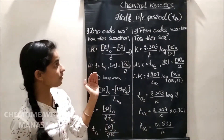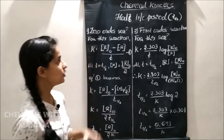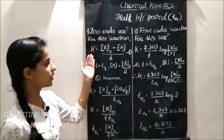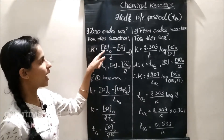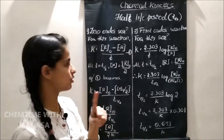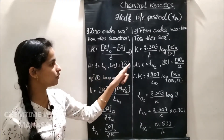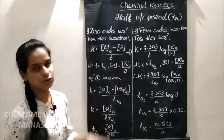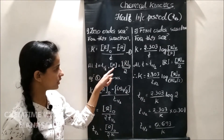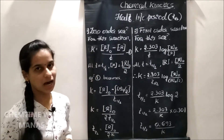You have half-life period for zero order and first order reactions in your syllabus. Let us consider zero order reaction. We know that for this reaction, the rate constant is given by K equals R naught minus R divided by T — let us call this equation number 1. At T half, the concentration of R is equal to R naught by 2, meaning at the half-life period, the concentration of the reactant equals half of its initial concentration R naught.